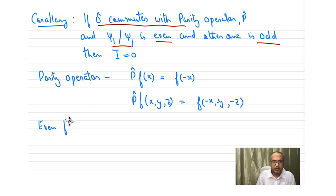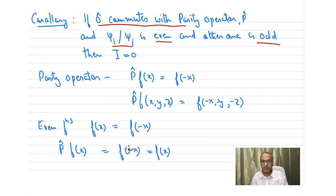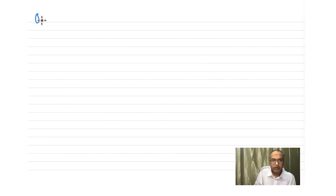If we apply parity on an even function — where f(x) = f(−x) by definition — we get f(−x), which equals f(x). So f(x) is symmetric with respect to parity.